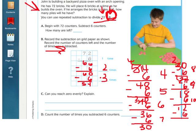So if I go over here and I want to answer C, can I reach zero evenly?